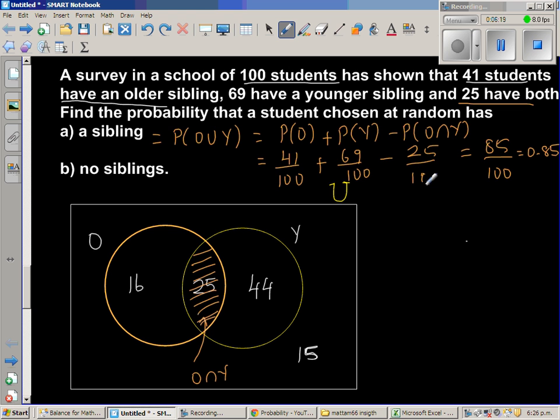Or we can do the same thing in a different way directly. So this is 16 plus 25 plus 44. This is 11 plus 4 is 15, 4, 6, 7, 8. So directly, without applying this rule, this is 85 out of 100, which is 0.85. So the probability of a student to have a sibling, that is either an older sibling or a younger sibling, is 85% or 0.85.